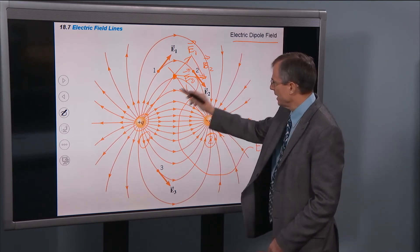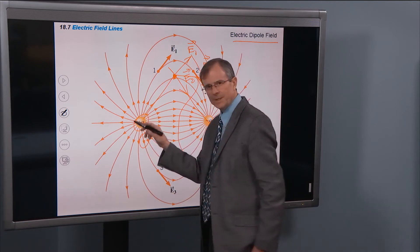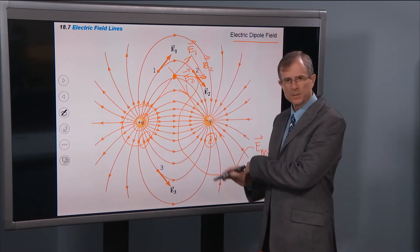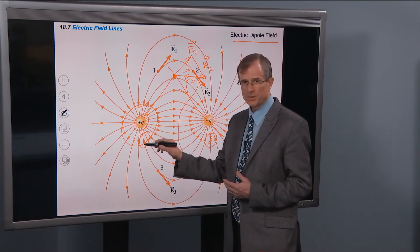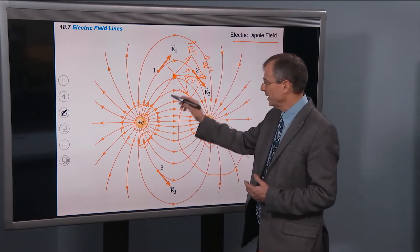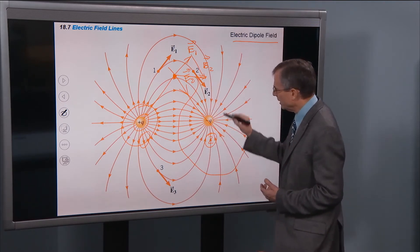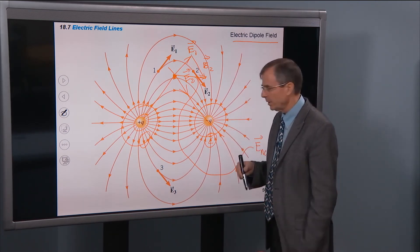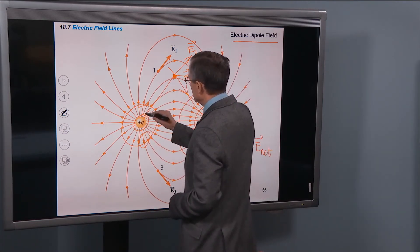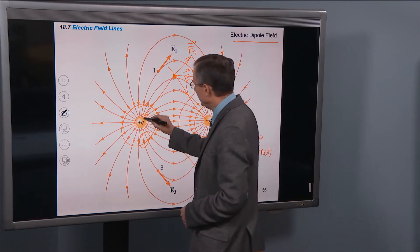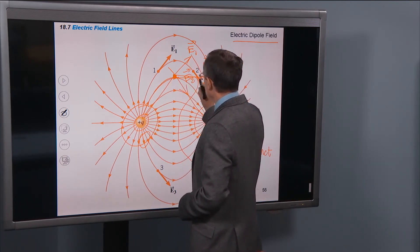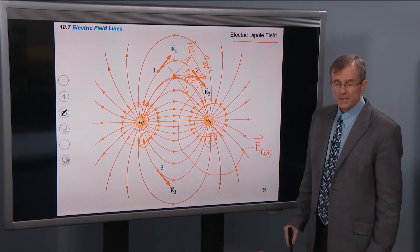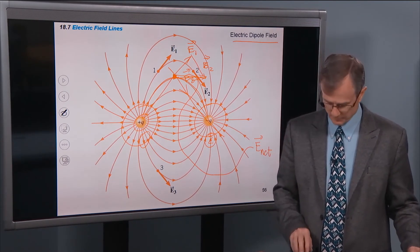As you get closer to the positive point charge, the electric field lines look just like those for a single point charge — because those fields are so much stronger up close and get weaker farther away. Near the negative charge, the lines point radially inward. Out in between, you add the two together: the field line gets bent over, pointing horizontally, then curves down into the negative charge. It's a very beautiful pattern — the same as a dipole magnet.